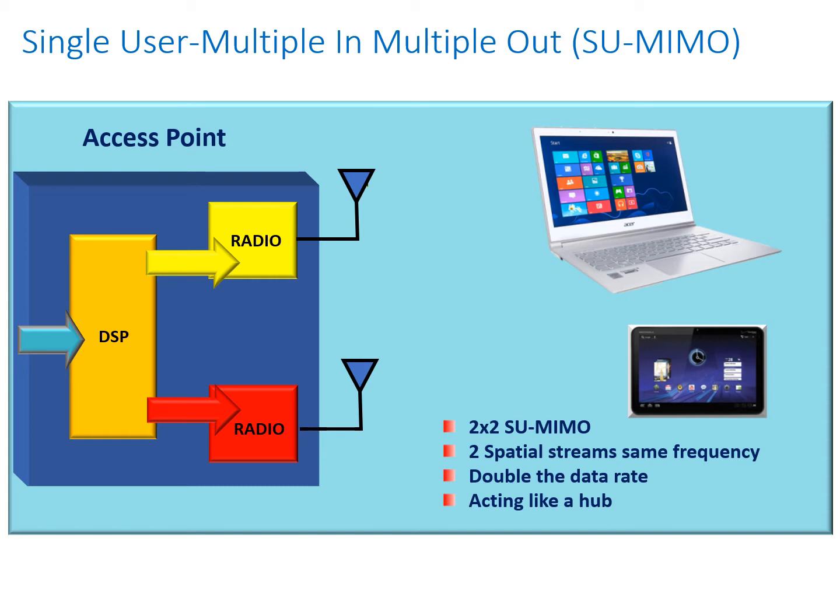Single-user MIMO has been on the market for a number of years. Here's a simple example of how it operates. The access point on the left has got two transceivers, two radios, two antennas, and with this access point we can support basically two spatial streams. We can double the data rate within a particular frequency, but the system is really acting like a hub.